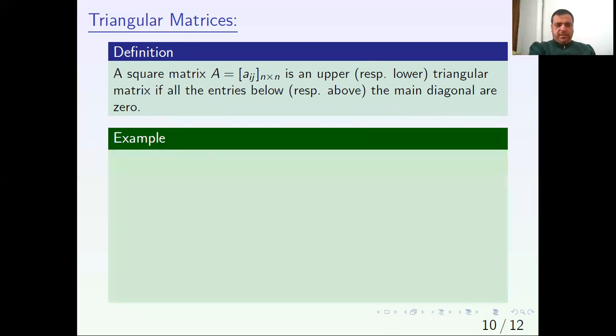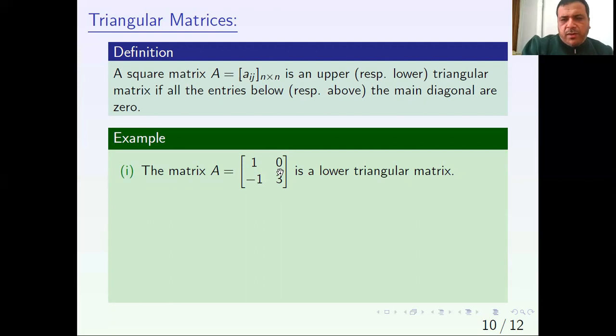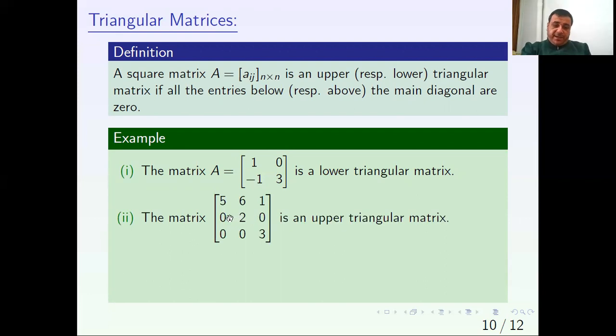For clarification, this example: notice this matrix - all the elements above the main diagonal are 0. There is only one element and it is 0, so this is an example of a lower triangular matrix. Don't get confused by the notation - lower refers to where the zeros are in the opposite direction.